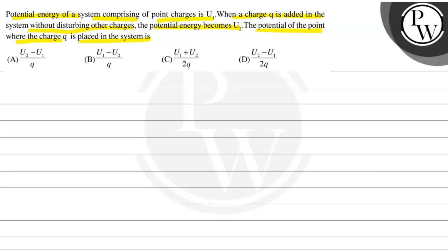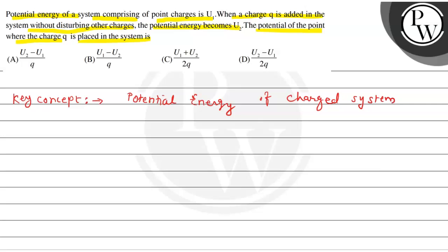Let's discuss the key concept. Our concept is the potential energy of a system. The potential energy of a charged system is defined as U equals 1 upon 4 pi epsilon 0 multiplied by Q1 Q2 by R. This is our potential energy formula. We will apply this formula to find the solution.